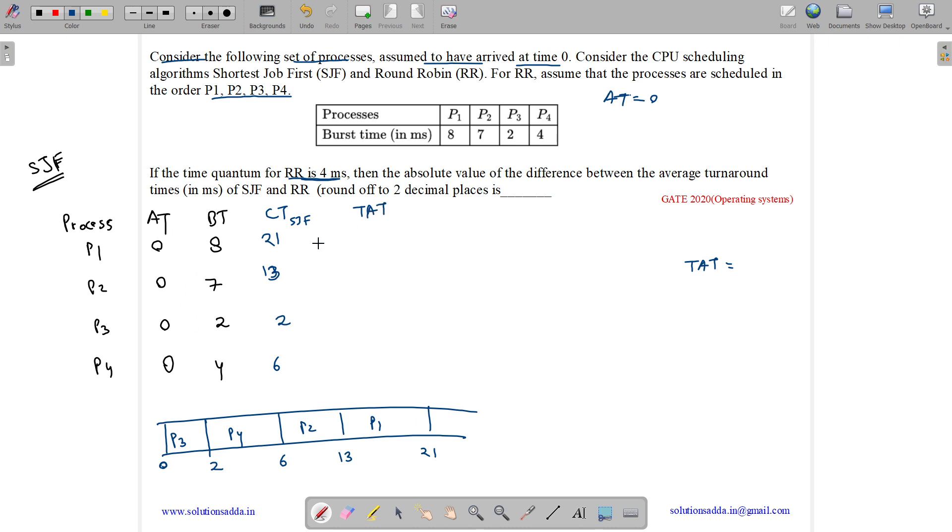As arrival time is all zeroes, turnaround time and completion time is same for all. So what is average turnaround time for shortest job first? It is 21 plus 13 plus 2 plus 6 divided by 4. So it comes out to be 10.5.